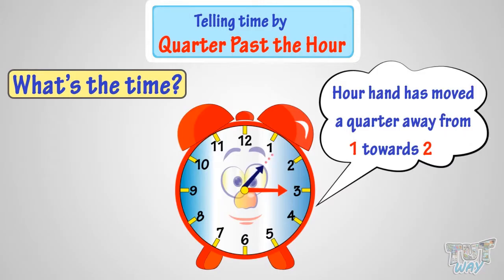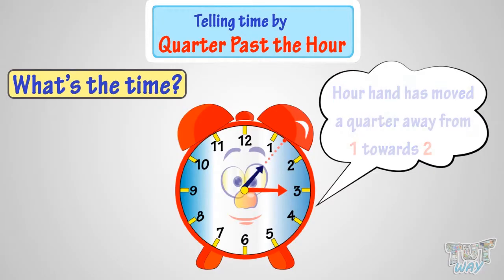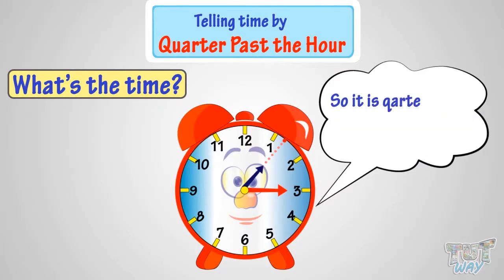Look at the dotted line. That's pointing exactly a quarter away from one towards two. So it is quarter past one, or 1:15.